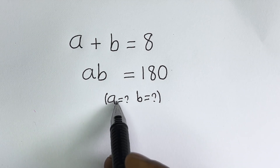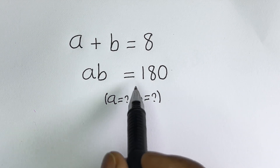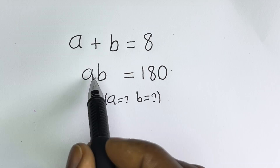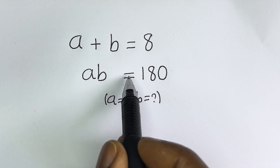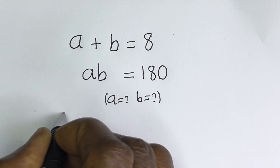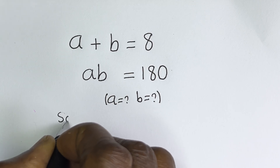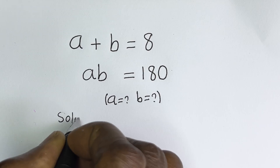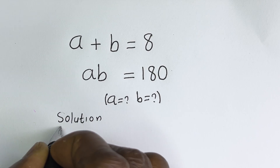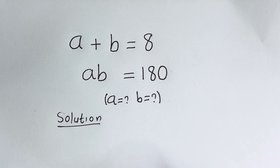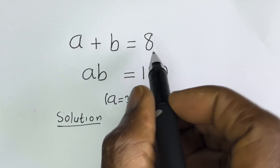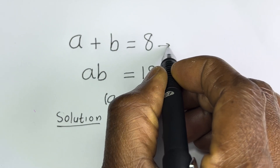Hello. How to solve for A and B in this equation: A plus B is equal to 8. Let's call this equation 1.